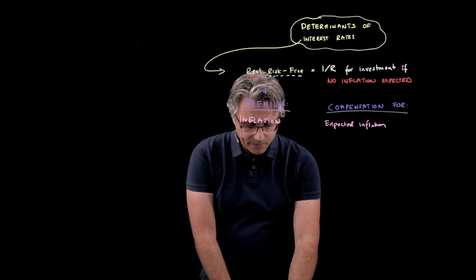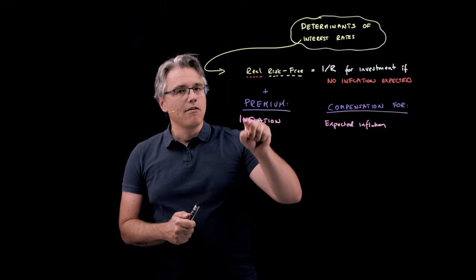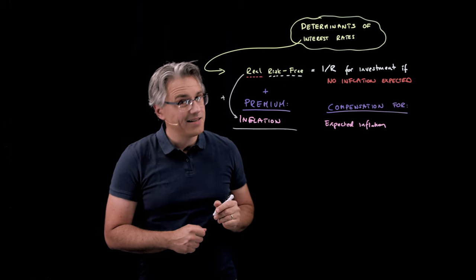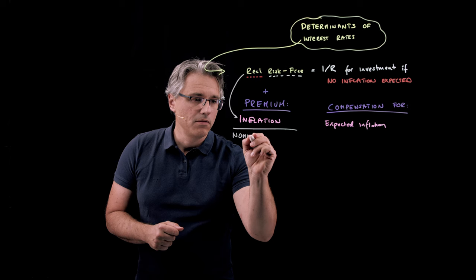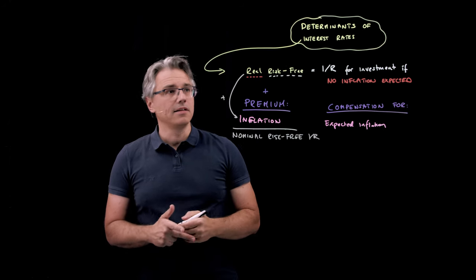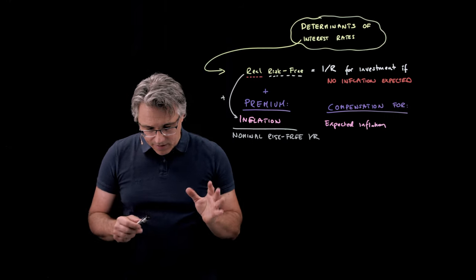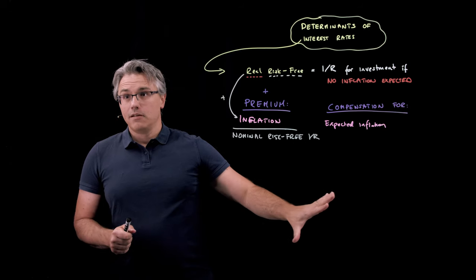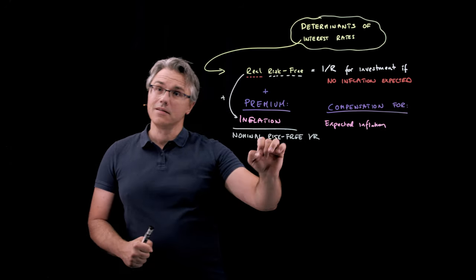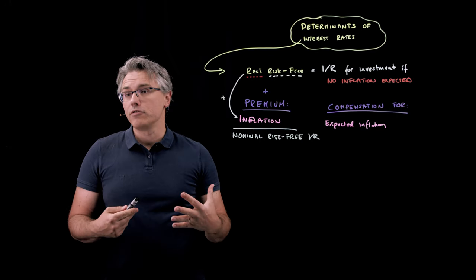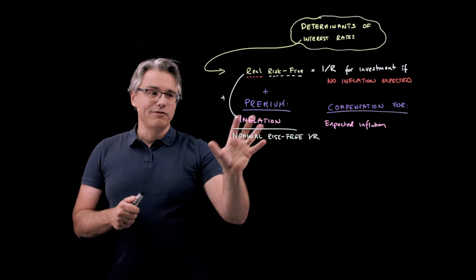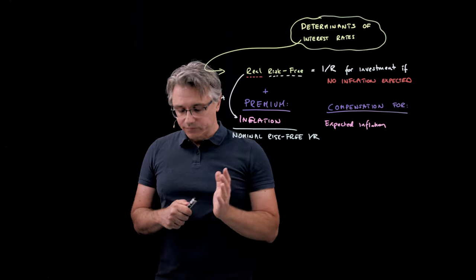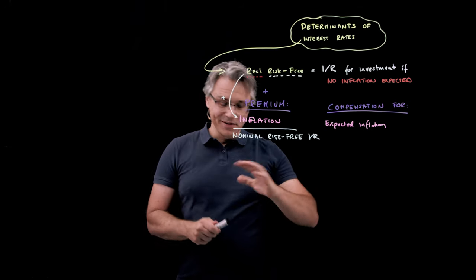When you combine the real risk-free rate with the inflation premium, these two things together give you what's known as the nominal risk-free rate — the nominal risk-free interest rate. We're still claiming this is a risk-free investment, so the only things you want to be compensated for are deferring present consumption and the expected erosion of purchasing power due to inflation. Please treat this sum as an approximation; there is a more scientifically correct way to compute it, which I'll show later on.